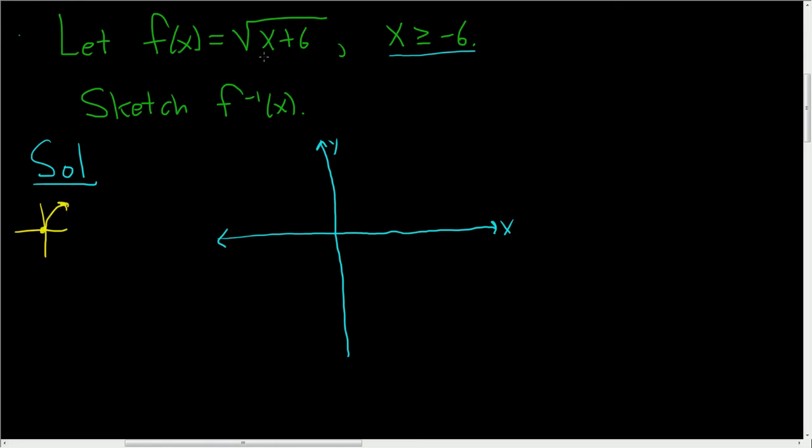We're adding 6 to the x, so whenever you add a number to the x, you go left. In this case we go left by 6. So we're taking this picture and moving it left by 6.